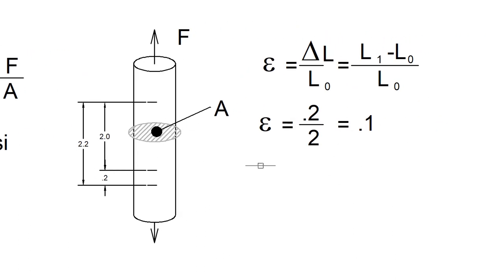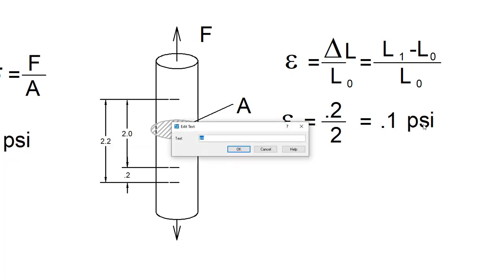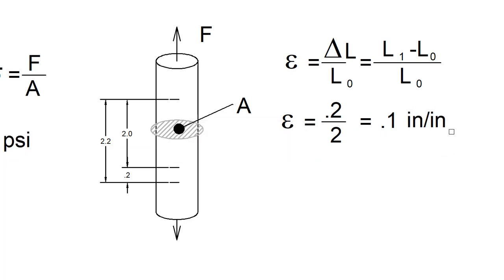The units of strain: we have inches divided by inches. When you divide a unit by itself you get one — the units disappear. So strain is dimensionless. Sometimes you'll see it written as mm/mm or in/in just to remind people where the units went. It doesn't matter what units of length you use — strain will always come out the same dimensionless value.